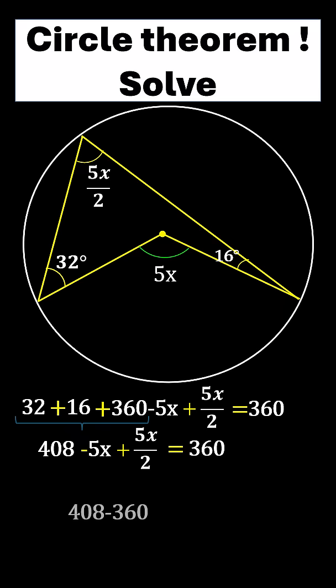Now 408 minus 360 is equal to 5x minus 5x divided by 2, so we get 48 will be equal to 2.5x. Dividing by 2.5 both sides, x will be equal to 19.2.